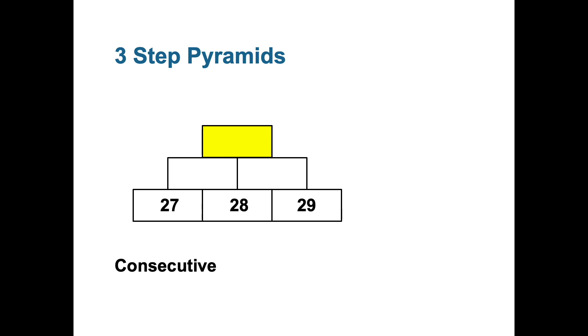Just as before we want to find the number at the very top of the pyramid in the yellow box. So 27 and 28 have to be added together to give the answer to the box above them. 27 and 28 is 55 in this case.